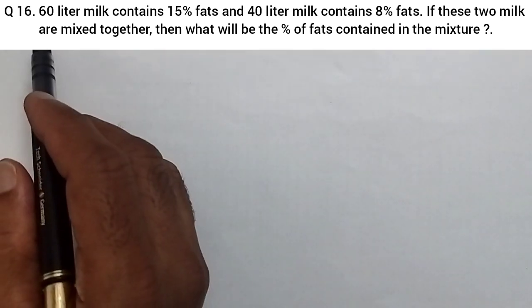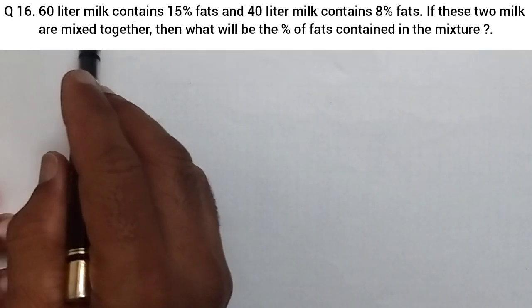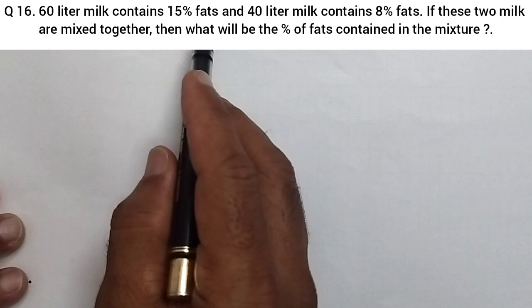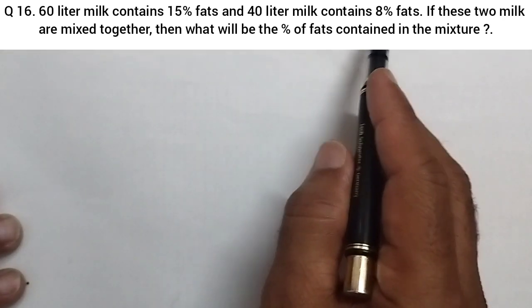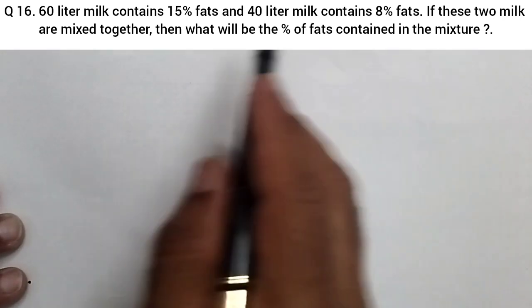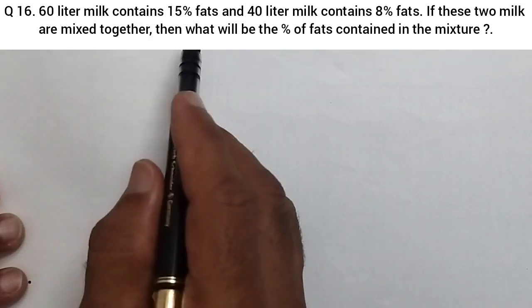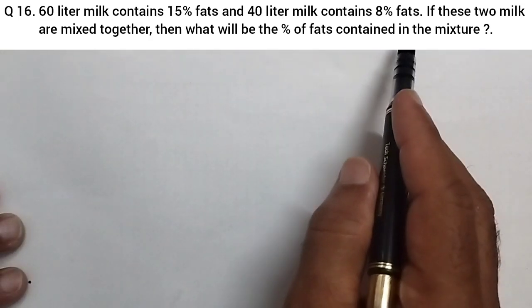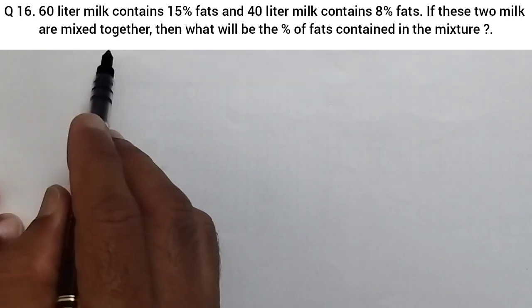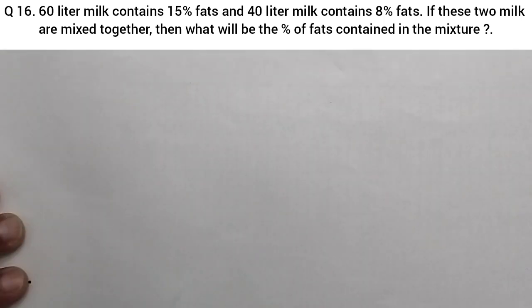Your question is given: 60 liter milk contains 15% fat and 40 liter milk contains 8% fat. If these two milks are mixed together, then what would be the percentage of fats contained in that mixture? Very simple question, now see here.